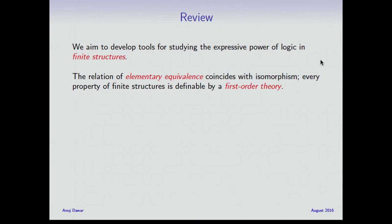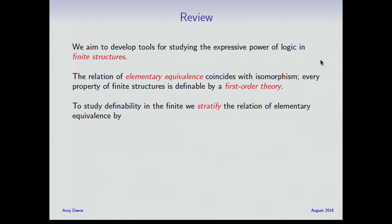I noted that the relation of elementary equivalence, which is the fundamental relation in classical model theory, is in a sense trivial on finite structures in that it coincides with isomorphism, so it doesn't tell us anything about definability as such. And as a consequence, every property of finite structures is definable by a first-order theory. So to study definability in the finite, we stratify this relation of elementary equivalence — one stratification by quantifier rank, and the other by the number of variables.